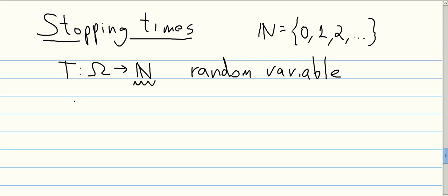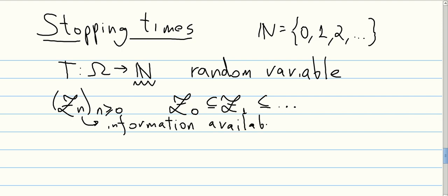What do we mean by a random stopping time? Let us recall that we have this filtration, FN, which is nothing more than a chain of sigma algebras. So we have F0 contained in F1, contained in F2, and so on and so forth. It's just a family of growing sigma algebras. And the interpretation of this is that FN gives you the information available at time N.